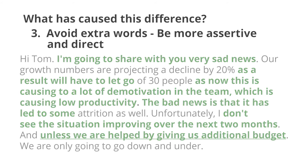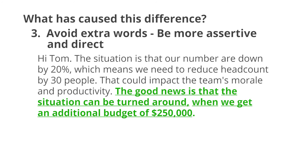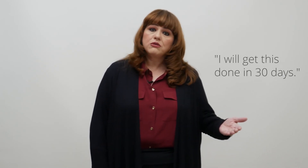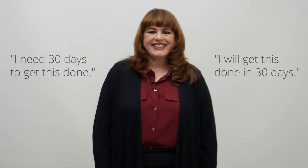Be solution-oriented and assertive. 'The good news is that the situation can be turned around when we get an additional budget of $250,000' — this is what you need to solve the situation. Here's a tip: when you say 'I'll try and get this done within 30 days,' it leaves doubt in the listener's mind and makes you sound unsure, passive, and fearful. Remove the words 'try' and 'maybe' from your vocabulary. Either you'll get it done or you won't. A more effective way to say this is: 'I will get this done in 30 days' or 'I need 30 days to get this done.'